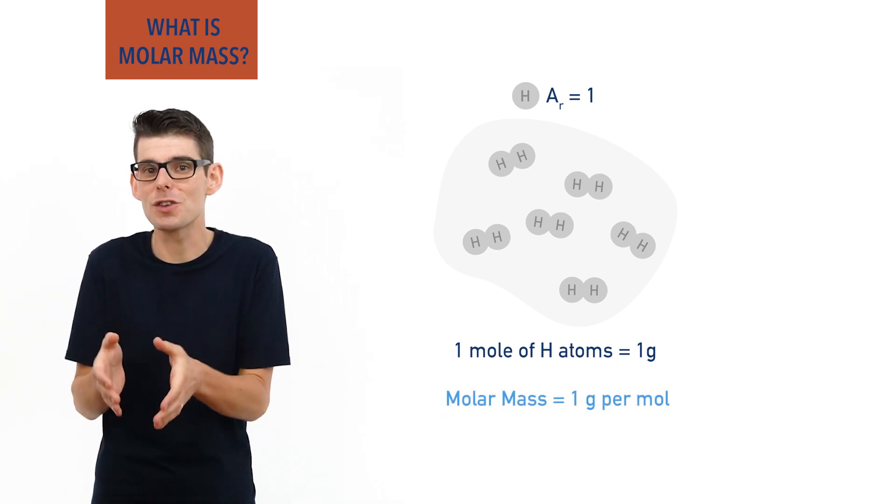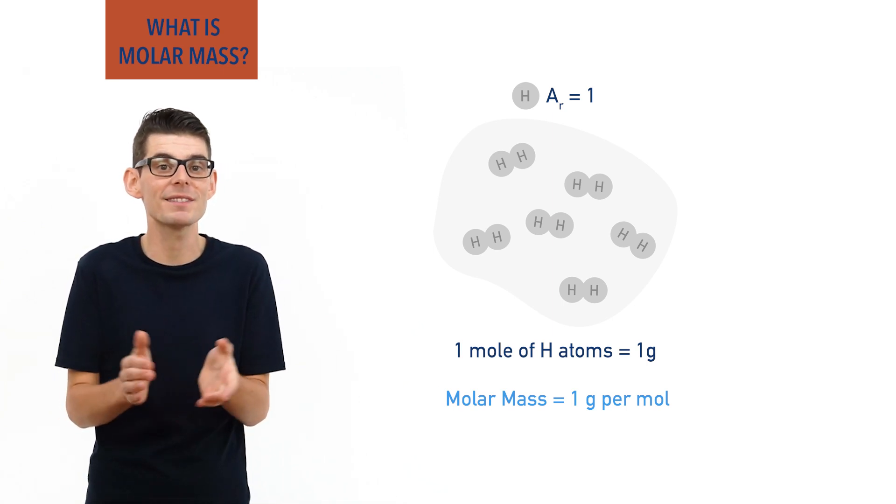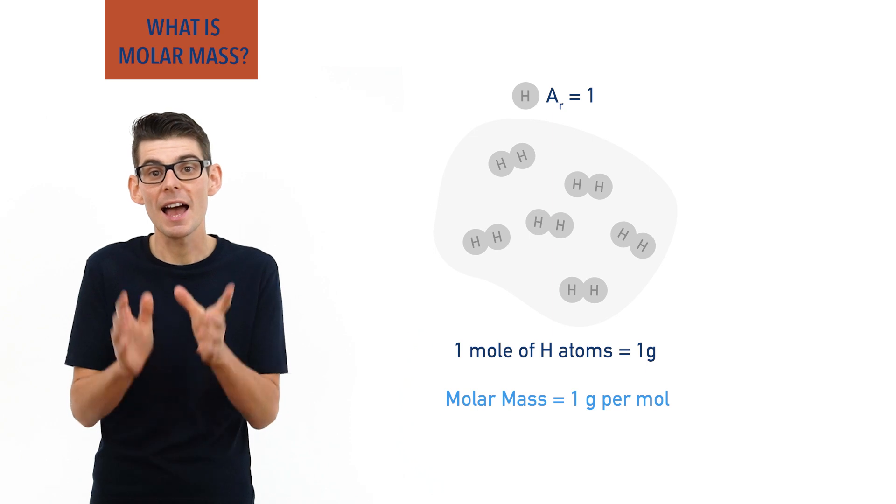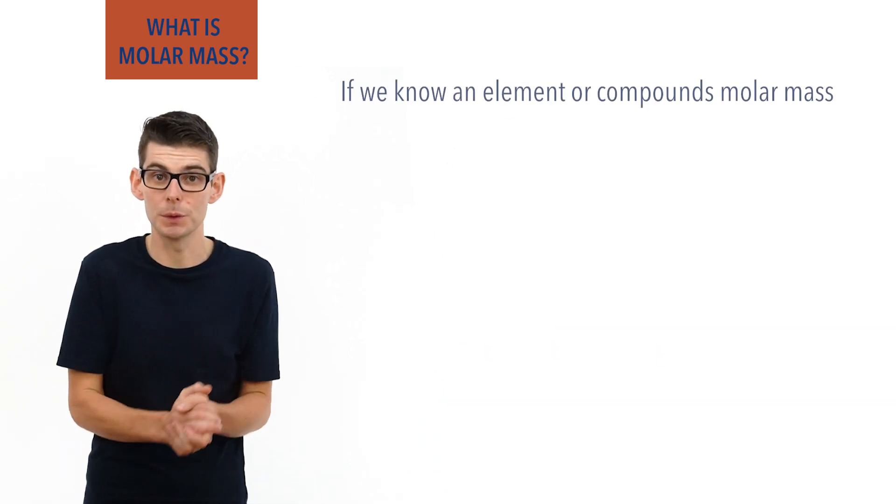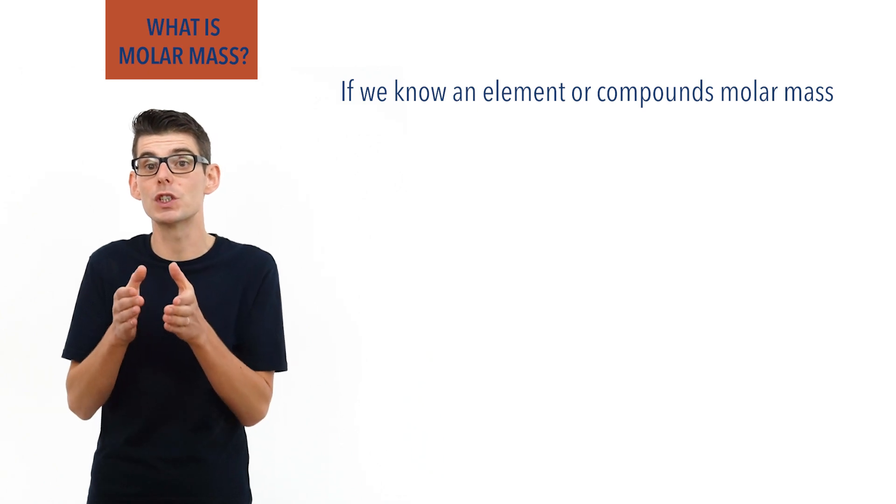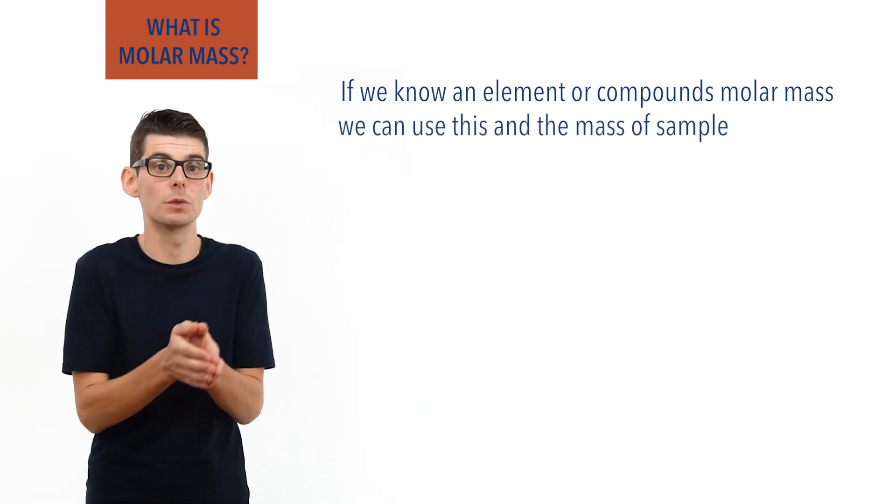We can't directly measure how many atoms or molecules are present in a sample as they are too small to count. However, if we know the molar mass of an element or compound, we can use this and the total mass of the sample to find the moles of atoms or molecules in it.